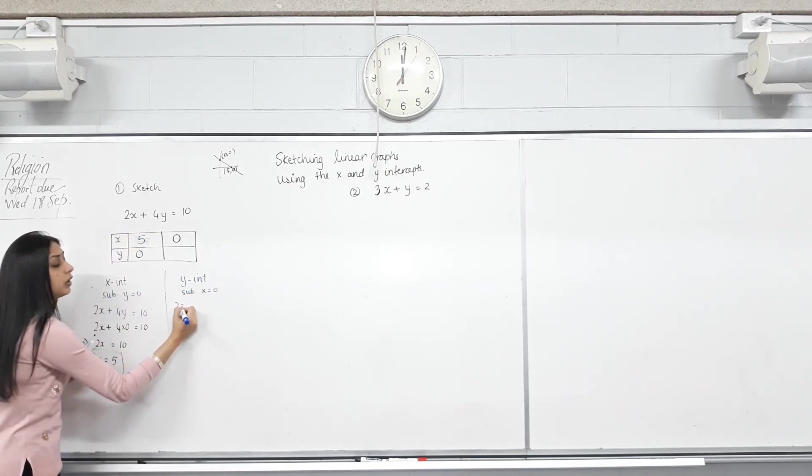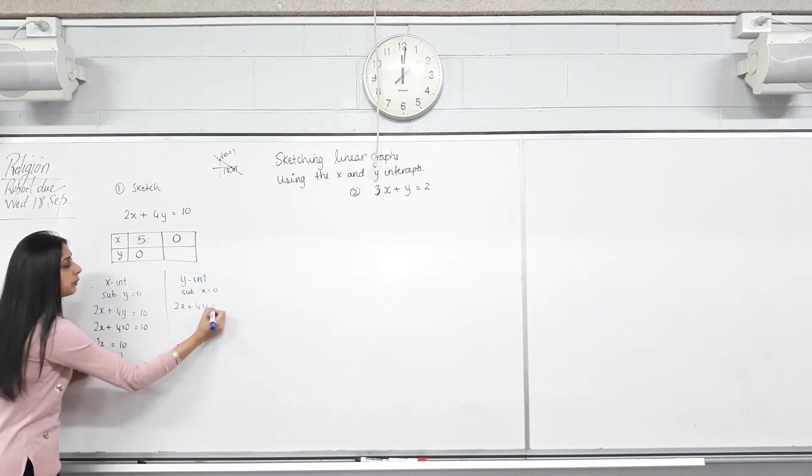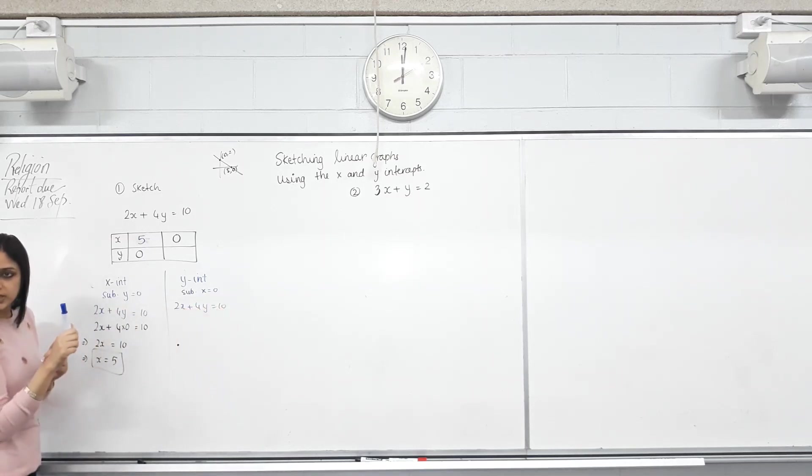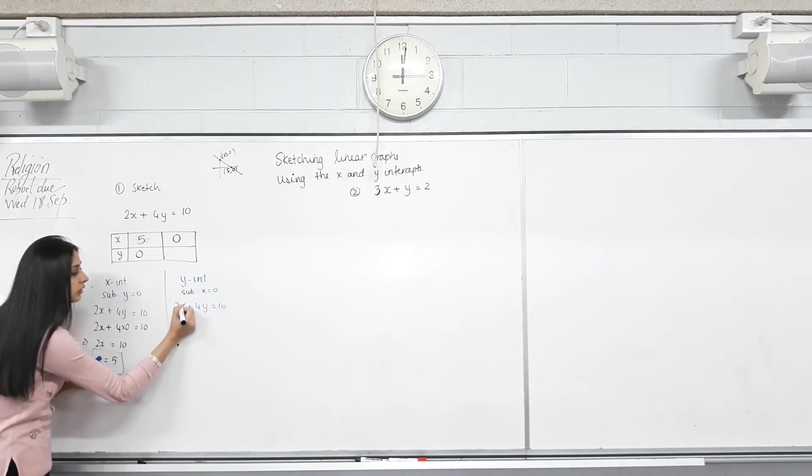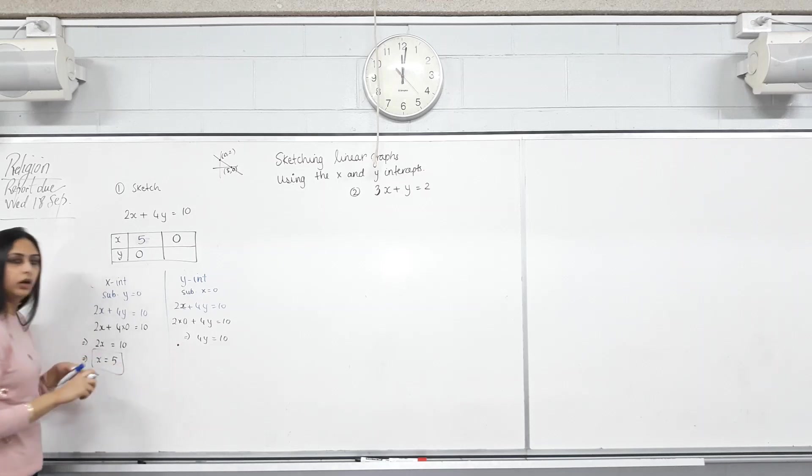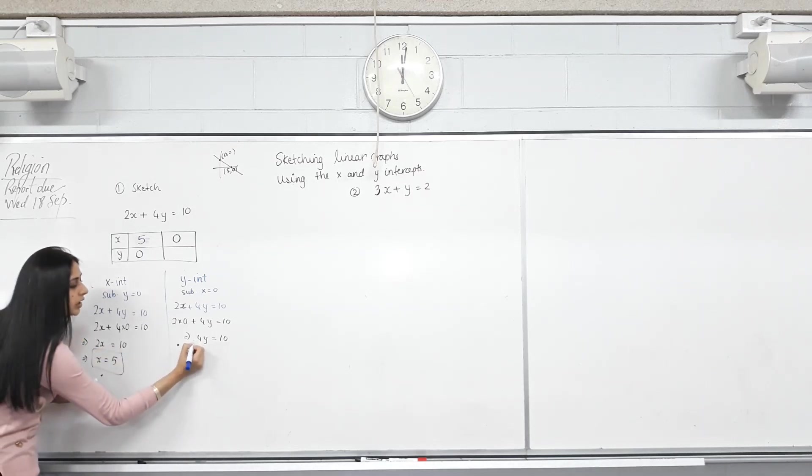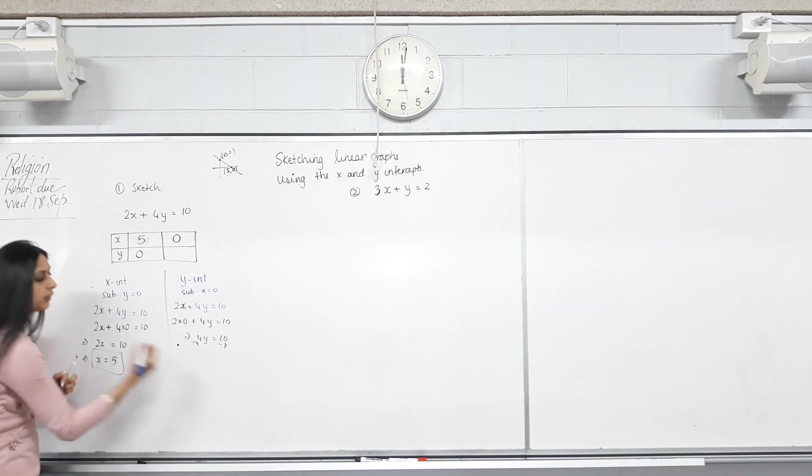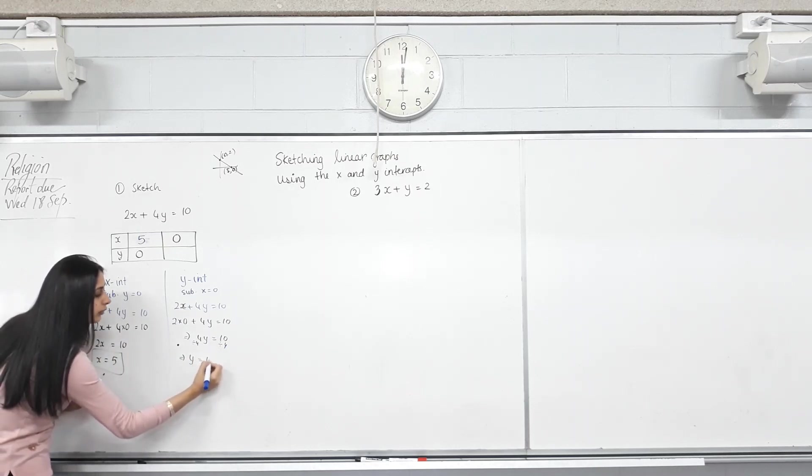X equals zero. Again, copy the equation. Wherever you see X in that equation, you replace it by zero. So 2X means 2 times X, that is 2 times zero. So 4Y equals 10. Now, dividing both sides by 4. What do I get? Y equals 10 over 4.